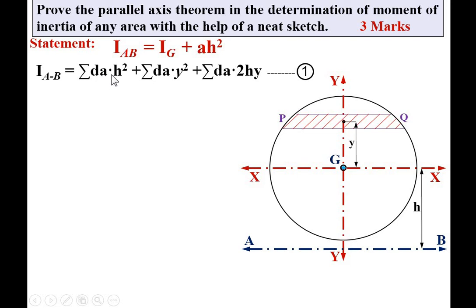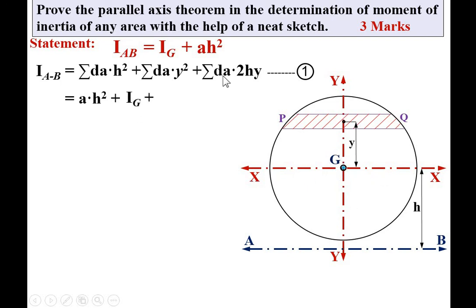From Equation 1: Σ dA·h² equals A·h², since the algebraic summation of dA over the entire area is the total area A. The term Σ dA·y² is the moment of inertia of the elemental area dA at distance y from the XX axis, and since XX passes through the CG of the entire lamina, this equals Ig. The remaining term is Σ dA·2hy, where 2h is a constant, giving 2h·(Σ dA·y), which equals 2h·A·ȳ. Let this be Equation 2.